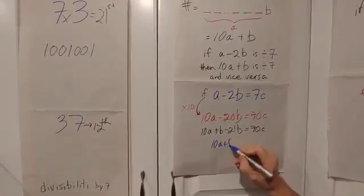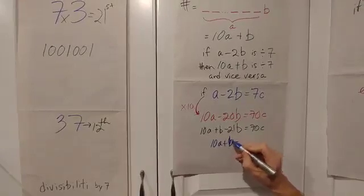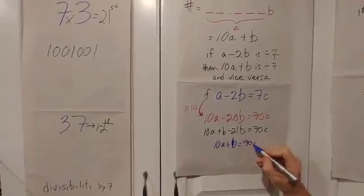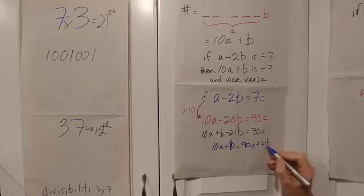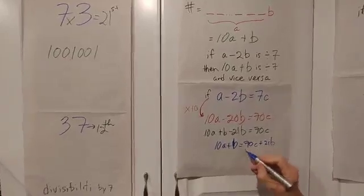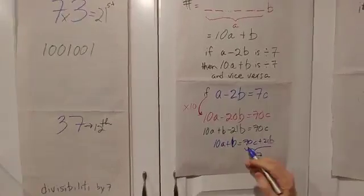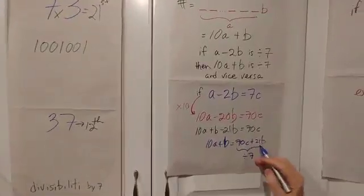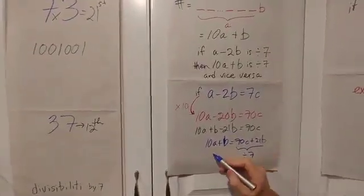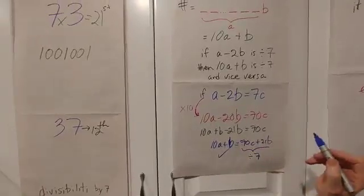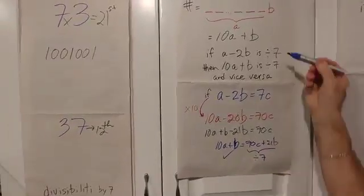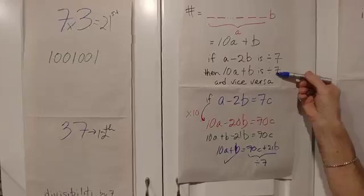So I'll get 10A plus B equals 70C plus 21B. Now this is clearly divisible by seven because 70 can be divided by seven and 21 can be divided by seven. So therefore, that number is divisible by seven. So I've shown that if this is divisible by seven, then that is.